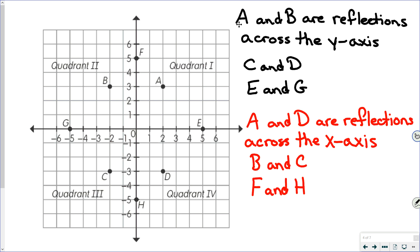From this we can determine that whichever axis you're being reflected across, that coordinate stays the same. So reflected across the Y axis, the Y coordinate stays the same. Reflected across the X axis, the X coordinate stays the same. And then the other coordinate becomes its opposite.